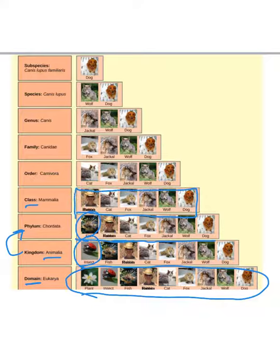Next we have order. So even more specific, we're talking about Carnivora. You've got cats included, but you lose the human. So humans don't belong in that particular order. So we now have cats, foxes, jackals, wolves, and dogs. Next we go down to family Canidae, which is going to lose the cat. So the cat drops out. We've got fox and dog and relatives.